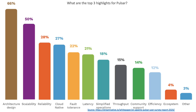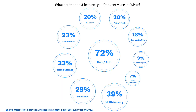Of the top three highlights for Pulsar, number one was architecture design, which is why we're going to be talking about that more today. Scalability and reliability were also highlighted in the top three. The architecture of Pulsar, its scalability, and its reliability all go hand in hand, along with all these other features — they're all closely interconnected.